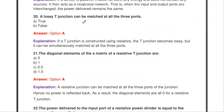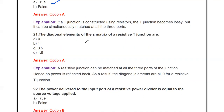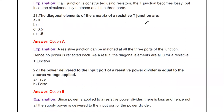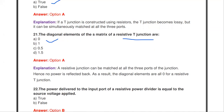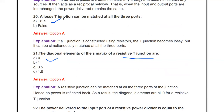Next question: a lossy T-junction can be matched at all three ports — true or false? It is true. If a T-junction is constructed using resistors, it becomes lossy, but it can be simultaneously matched at all three ports. For a resistive T-junction, the diagonal elements of the S-matrix (S11, S22, S33) are zero because all three ports are matched.